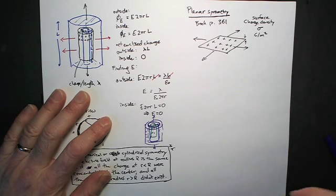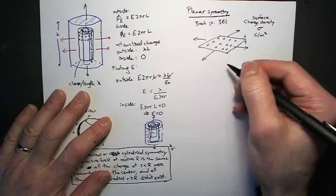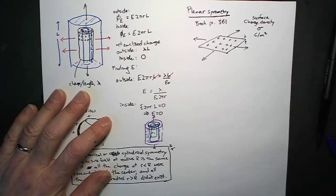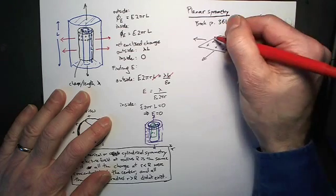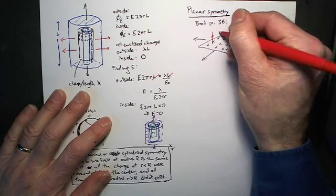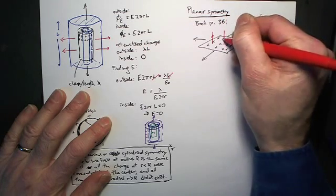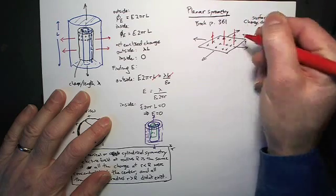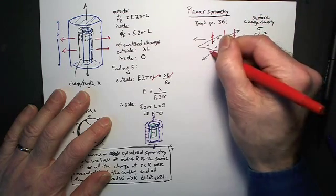So again, we find our, we use our multi-step procedure. We know that from arguments that we made before, based on the symmetry of the situation, that the electric field will point, when you're on this side of the surface, the top side, the electric field will point up. On the bottom side, it's going to point downward, like this.